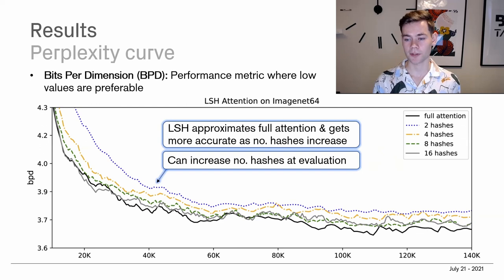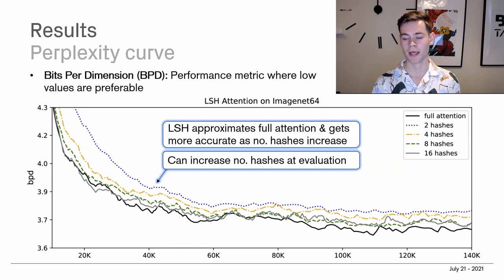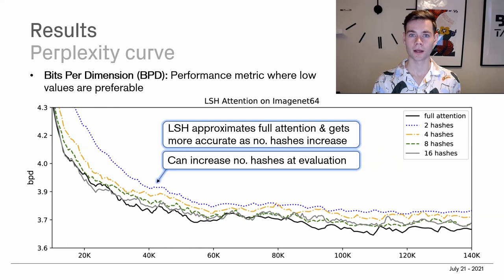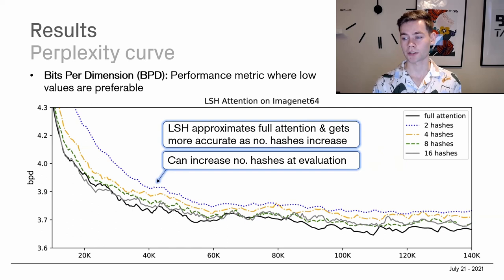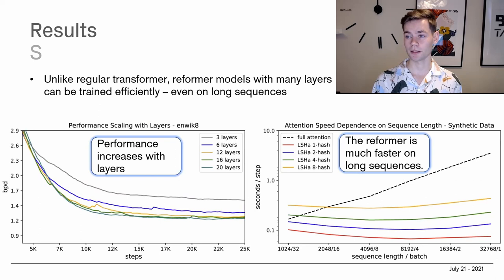A neat feature of this training procedure is that you can increase the number of hashes at evaluation time — train with fewer hashes and then increase them for evaluation. There's a trade-off between computational efficiency and performance, and interestingly, training with a lower number of hashes and then increasing them at evaluation time still boosts performance. You're not stuck with the number of hashes used during training.